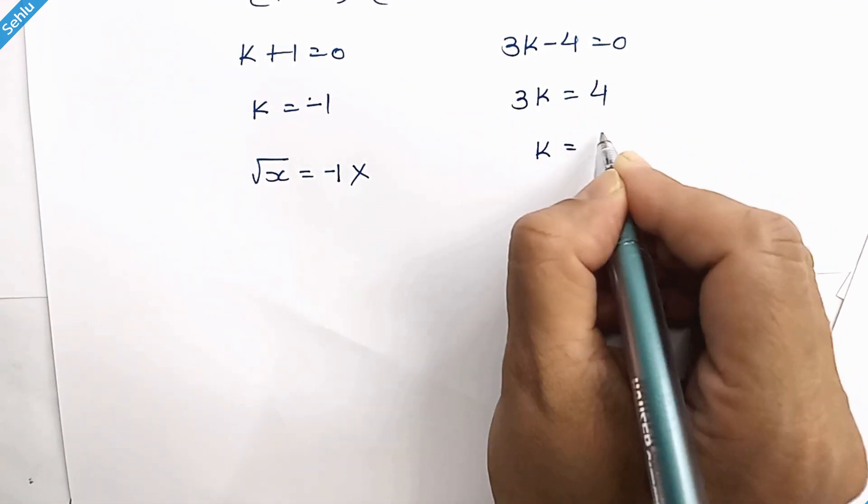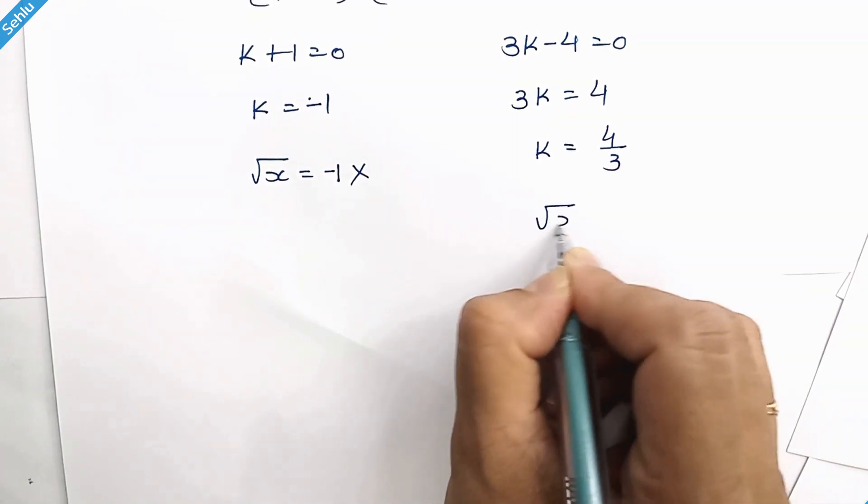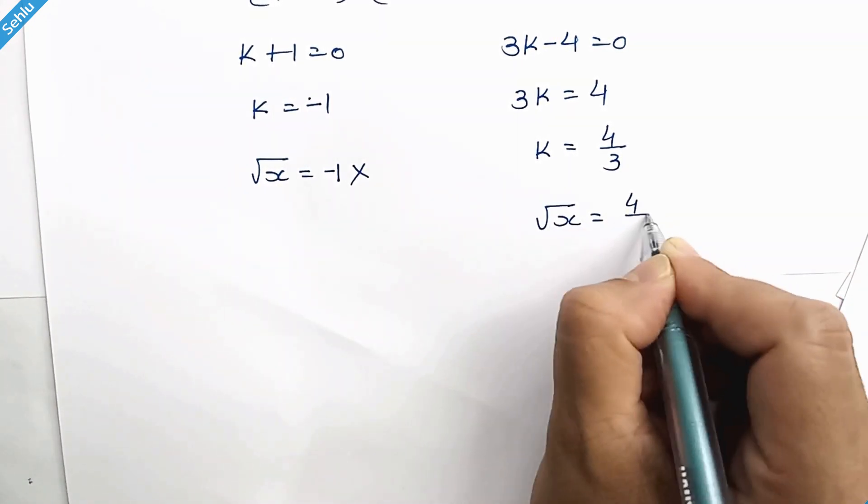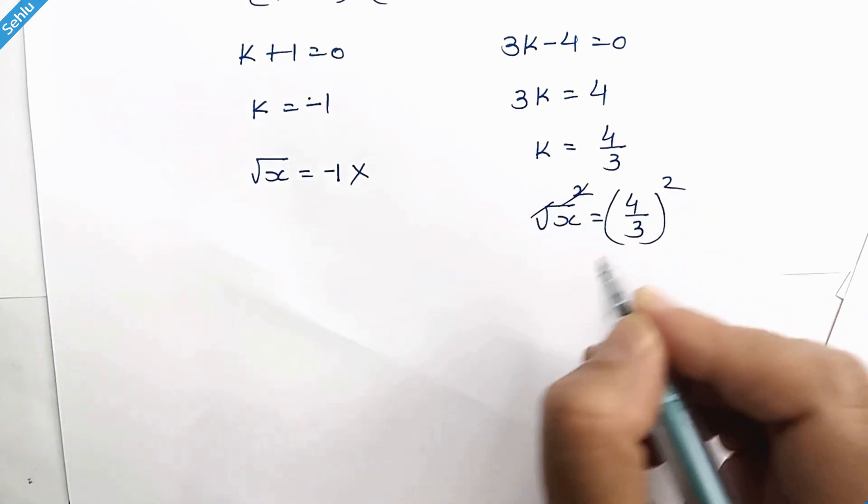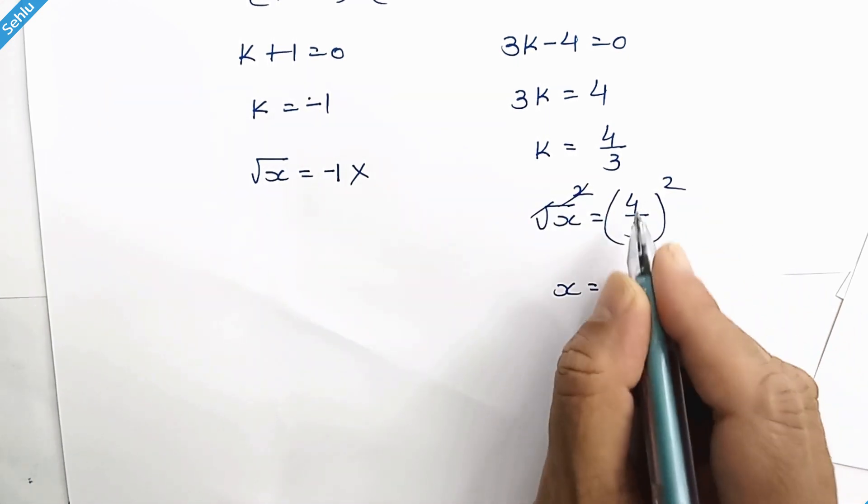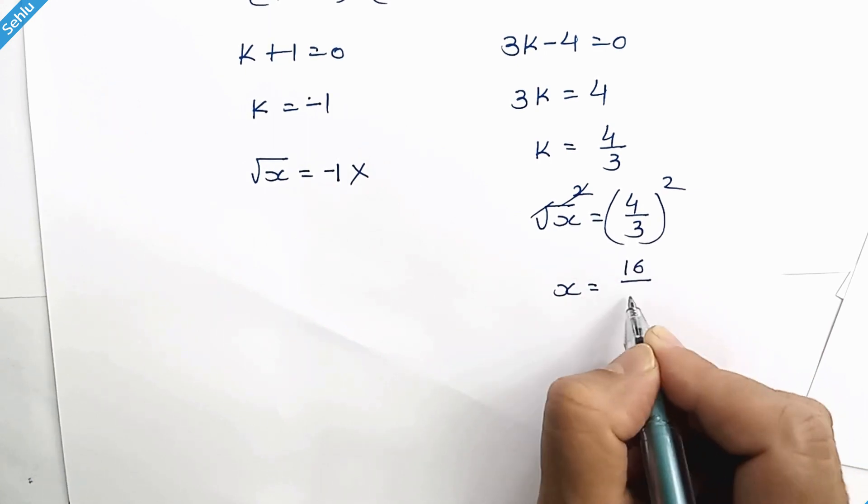So k equals 4 over 3. So square root x equals 4 over 3. Squaring both sides, we have x equals 4 squared is 16 and 3 squared is 9.